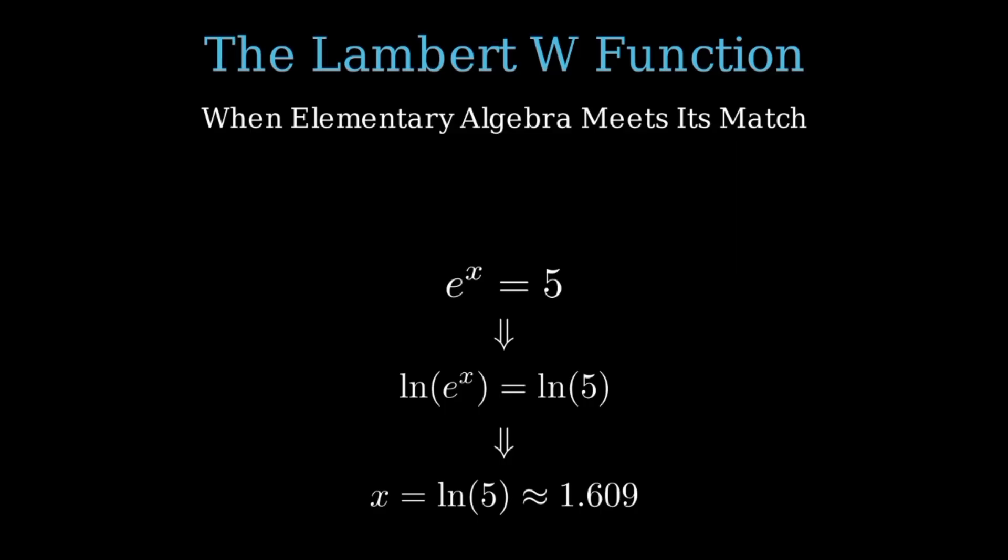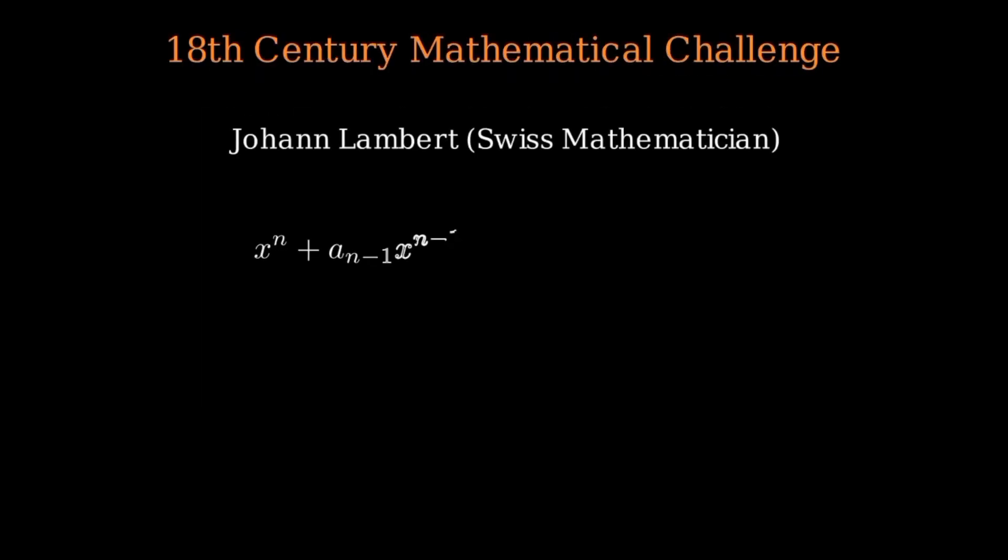But what happens when equations get more complicated? Let's travel back to the 18th century, when mathematical minds were grappling with polynomial equations of degree 5 and higher. Johann Lambert, a brilliant Swiss mathematician, was wrestling with these complex polynomial equations.